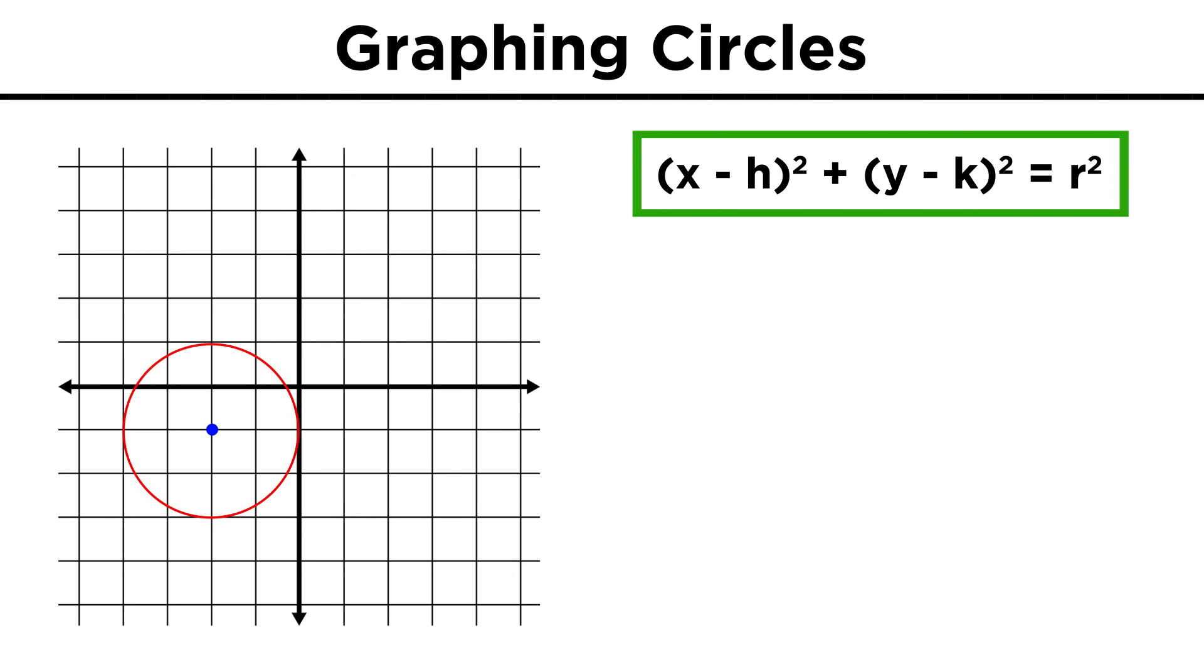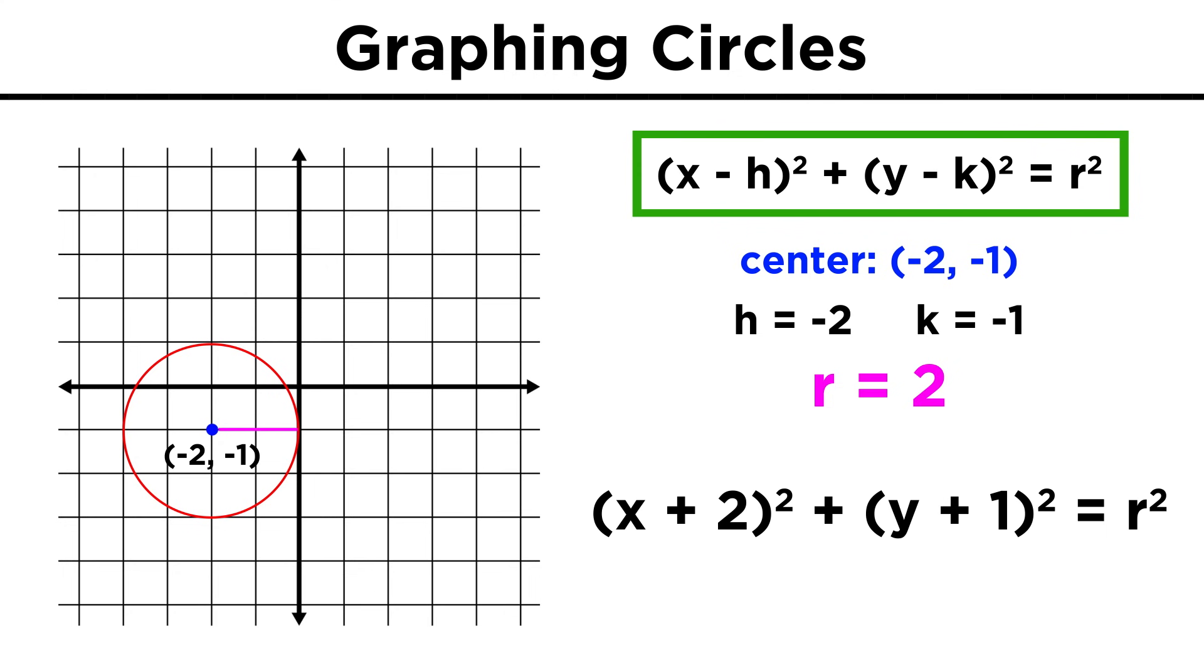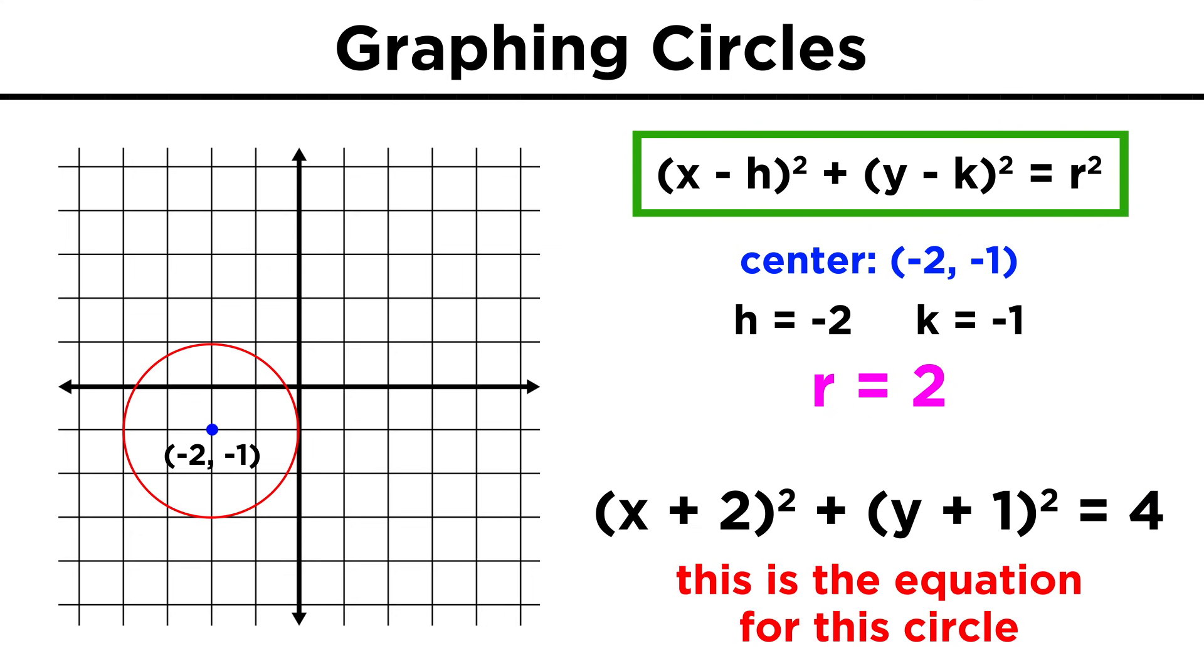We can also go the other way around and derive the equation of a circle from its graph. Look at this one here, all we need to do is locate the center to get the h and k values, and then find the radius. This is easy if we just go in a direct horizontal or vertical direction from the center and see how far it is to a point on the circle. Don't forget to square this, since we need R squared. So this will be the equation for the circle.